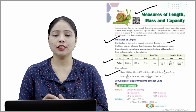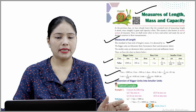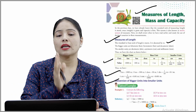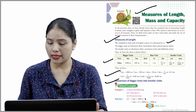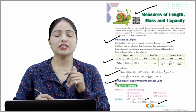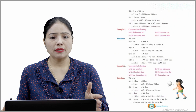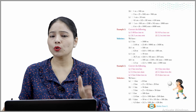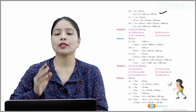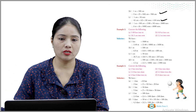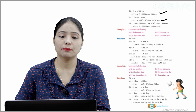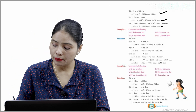Now, conversion of bigger unit into smaller unit. Example 1 — convert the following. First: 7 kilometers into meters. 1 kilometer = 1000 meters, so 7 kilometers = 7000 meters — just multiply by 1000. Second: 1 meter = 100 centimeters, so 9 meters = 900 centimeters. Third: 1 centimeter = 10 millimeters, so 43 centimeters = 430 millimeters. Similarly, 1 meter = 100 cm = 1000 mm, so 6 meters = 6000 millimeters.